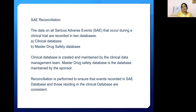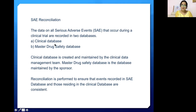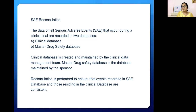SAE reconciliation: SAEs — Serious Adverse Events — are critical data, including events like hospitalization, life-threatening conditions, death, and congenital anomaly. Data on all serious adverse events that occur during a clinical trial are recorded in two databases: the clinical database, maintained by the clinical data management team, and the master drug safety database, maintained by the safety team or sponsor. Reconciliation is performed to ensure the events recorded in the SAE database and those in the clinical database are consistent.